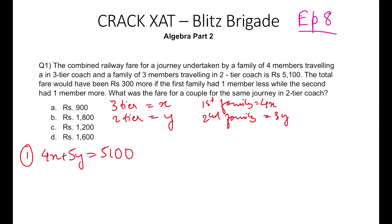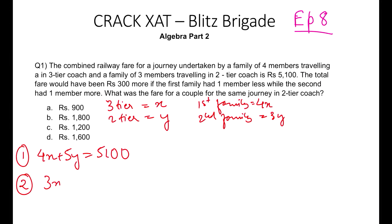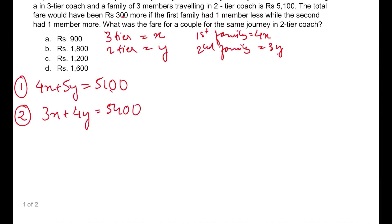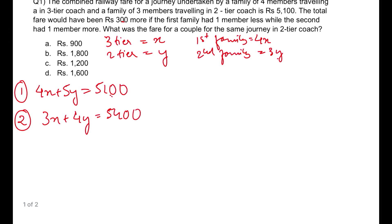If I read the rest part of the question, I will get a better picture that the total fare would have been 300 rupees more if the first family had one member more. And if that happens, then the second scenario would be that I am getting 3X plus 4Y. So 3X plus 4Y is now equals to 5100 plus 300, which is 5400.